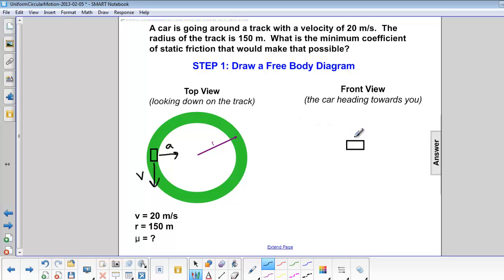Now the free body diagram. Mg is pointing downward. Normal force is up, and since there is no acceleration up or down, it is the same amount as mg.